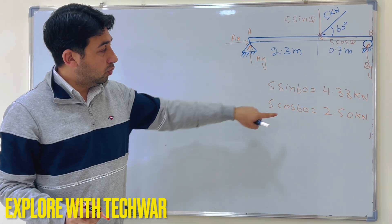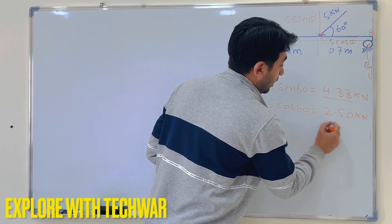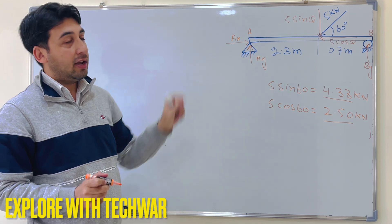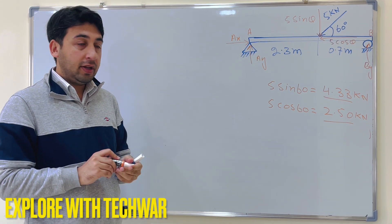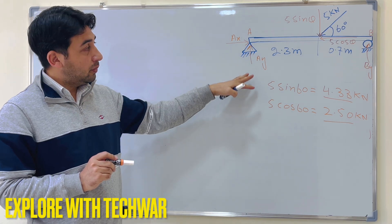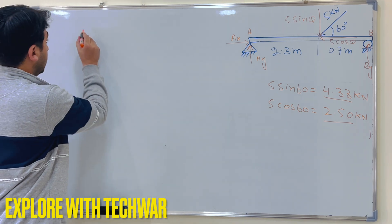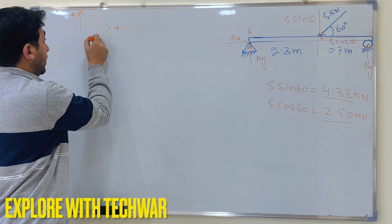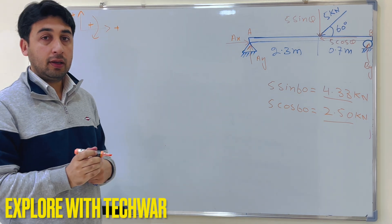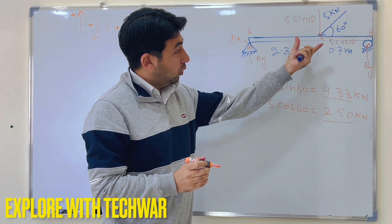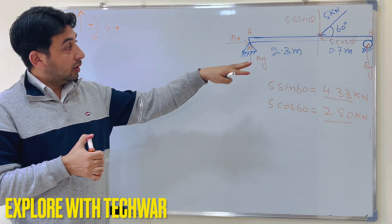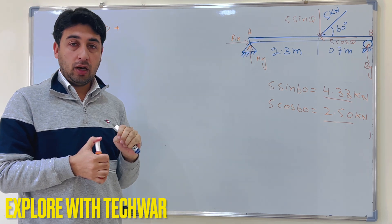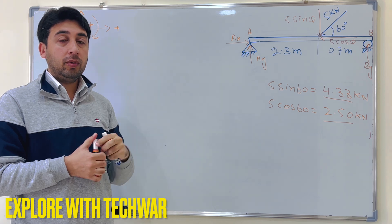We now have two forces — 4.33 kN and 2.50 kN — acting at 0.7 meters on the simply supported beam. My sign convention is: positive upward, positive to the right, and clockwise moments are positive. I assume Ay acting upward, Ax to the right, and By acting upward.